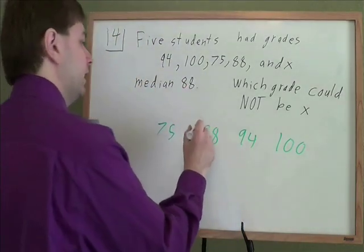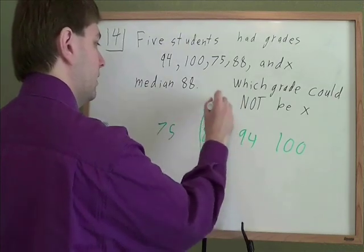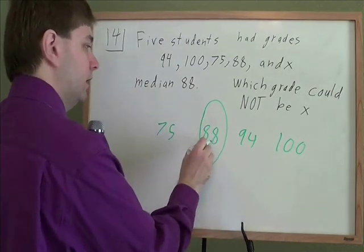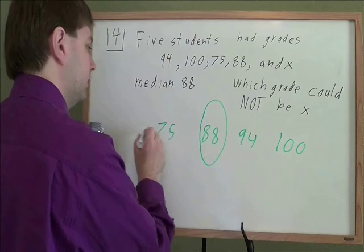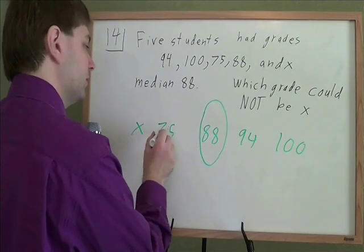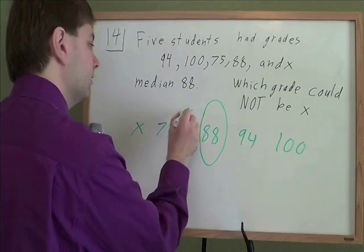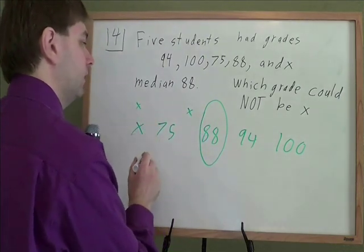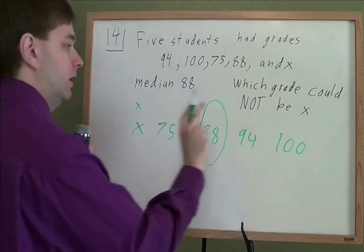But the trick is if the median is 88, what does that mean? That means that needs to be in the middle. And if there's two numbers on the right, there needs to be two numbers on the left. So whatever X is, it better be somewhere on the left side. It could be bigger than 75 or less than 75, but we need two numbers on the left and two numbers on the right.